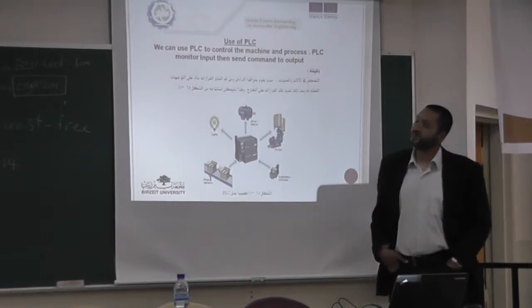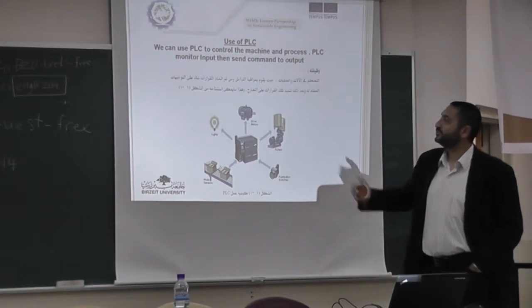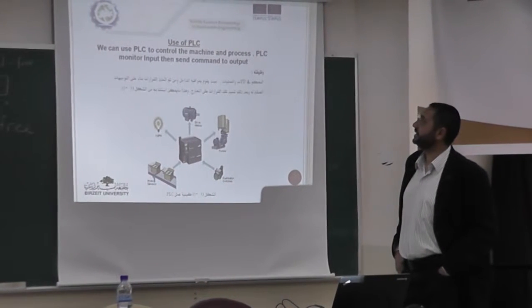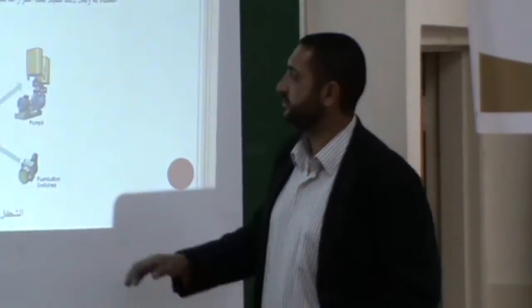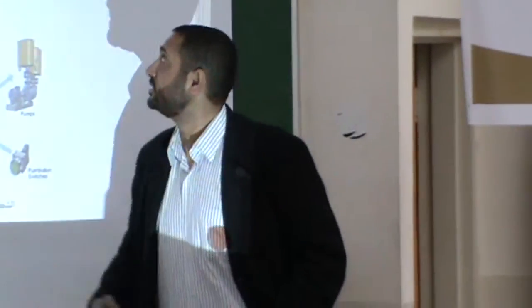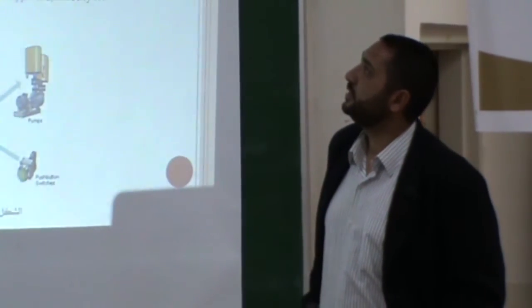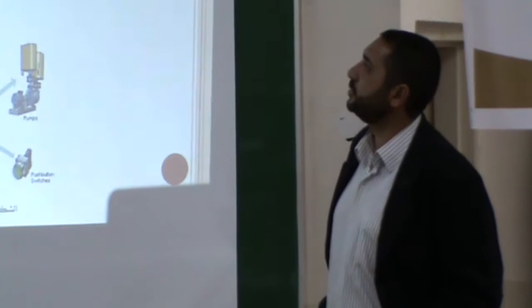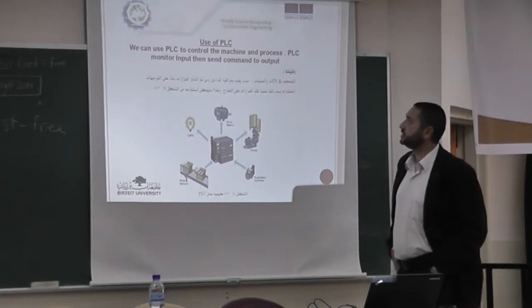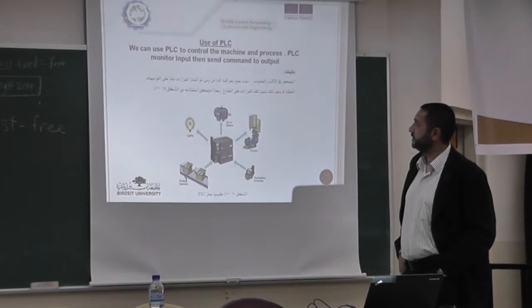Where can we use PLC? Where can we see PLC? As you note, we can use PLC to control machines and processes in a factory. This is the use of PLC. When we use PLC, we mean, as I mentioned, monitor input and then send a command to control the output.